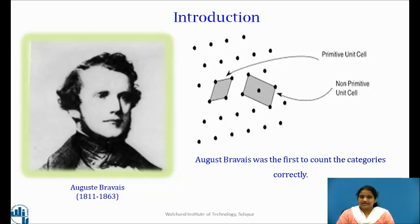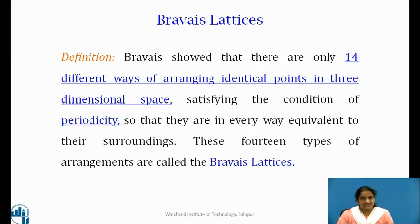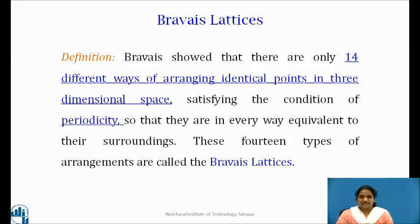One would expect many lattices which can be generated in three dimensions with different primitive and non-primitive cells. When the discrete points are atoms, ions or polymer strings of solid matter, the Bravais lattices concept is used to formally define a crystalline arrangement. Bravais showed that there are only 14 different ways of arranging identical points in three-dimensional space which satisfy the condition of periodicity, so that they are in every way equivalent to their surroundings. Crystals are grouped into seven systems, with seven primitive cells and seven non-primitive cells.